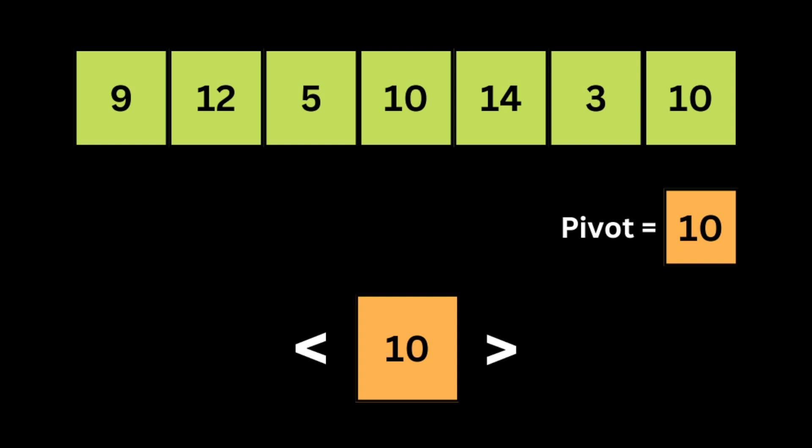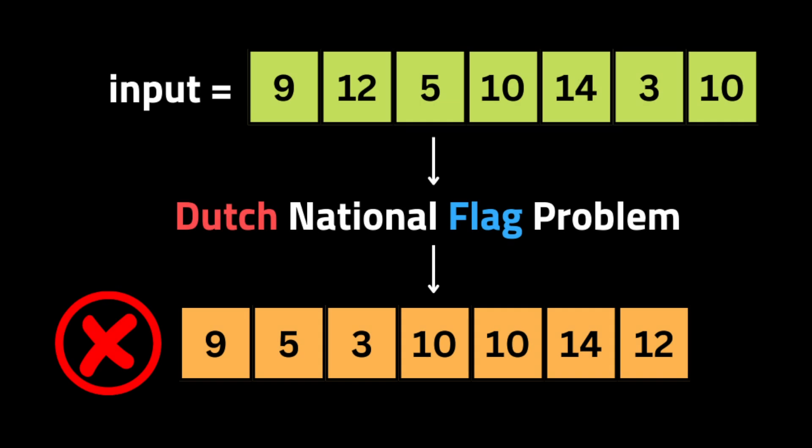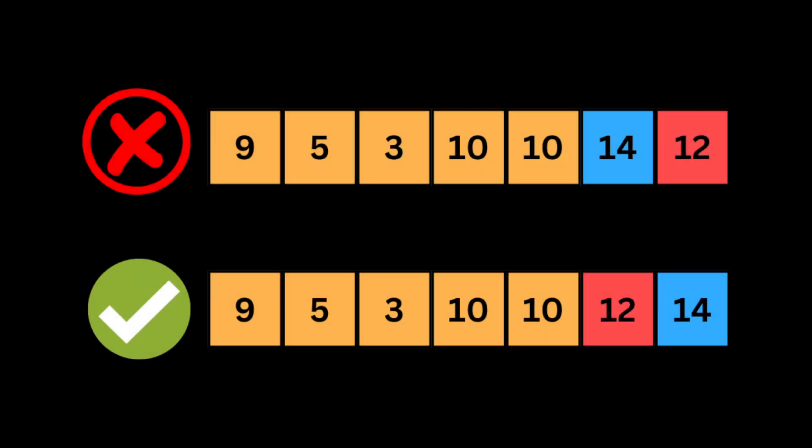The problem is: given an array and a pivot, partition the array into three parts. The first part must be less than the pivot, the second part must be equal to the pivot, and the last part must be greater than the pivot. The most important condition is that the relative order of elements less than the pivot and elements greater than the pivot must be maintained. If you try to solve it like the Dutch National Flag problem, the result will be sorted and the order will not be maintained — that's the tricky part where many junior developers fail.